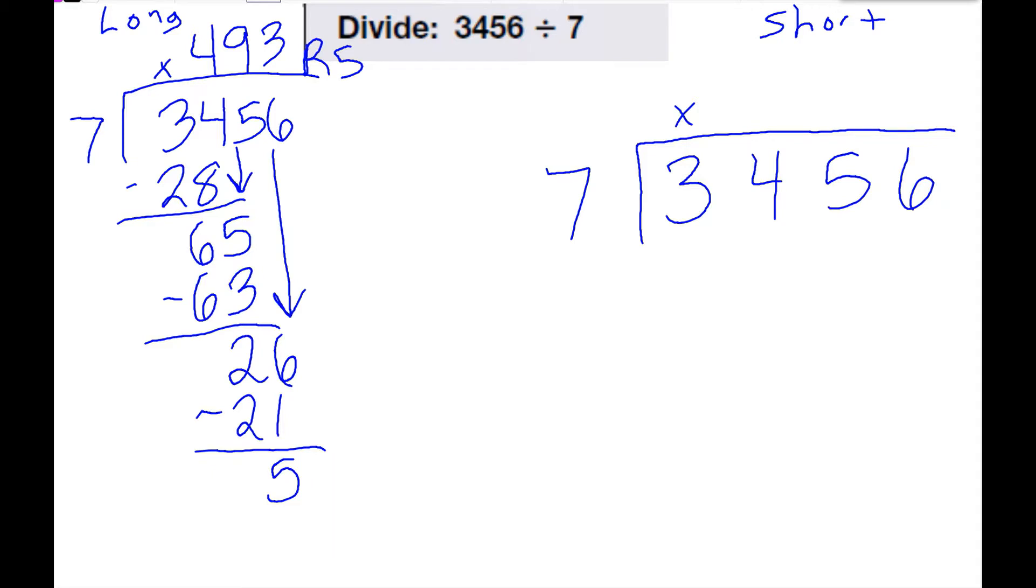Seven cannot go into three, but it can go into 34. I know that seven times four is 28. And then I just subtracted in my head at this point. 34 minus 28 is six. So instead of bringing it down here, I'm going to put the six up here next to the five. That's my next number. I'll change the color to make it easier to see.